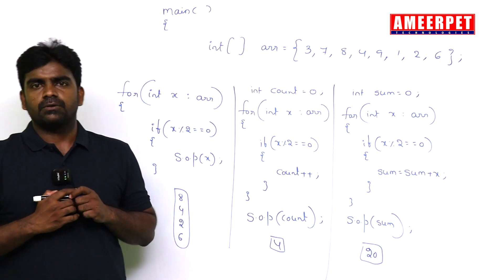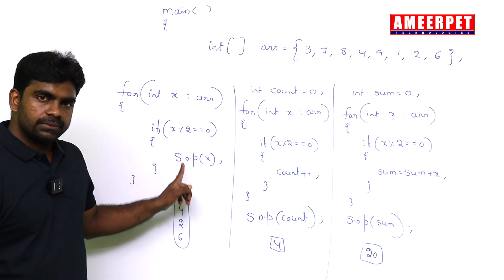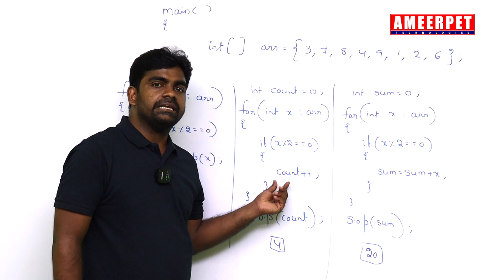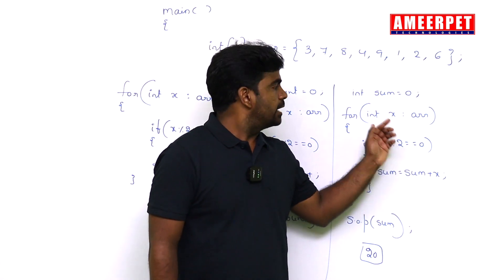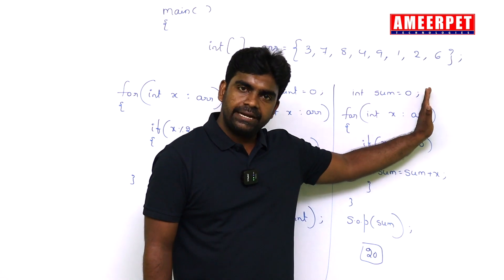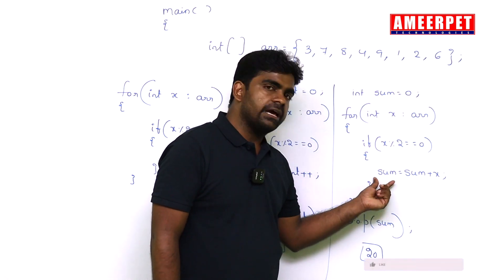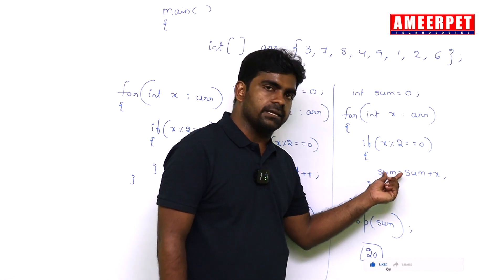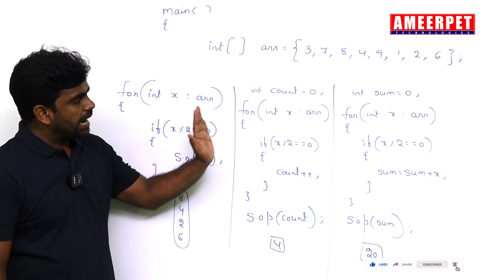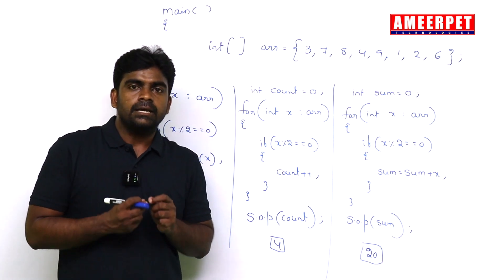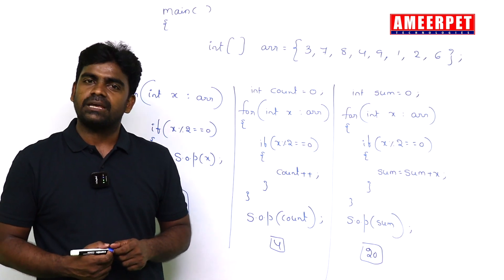The concept is the same. From the array, display all even numbers, count how many even numbers are there, find the sum of even numbers. Repeat the loop from start to end, checking the condition is even or not, then we are performing the operation either adding or counting or printing. If you practice all the three side by side, you can understand the concept easily. Hope you understood guys, thank you.